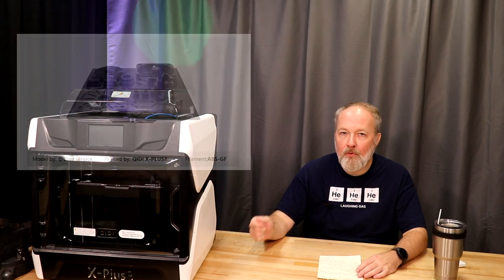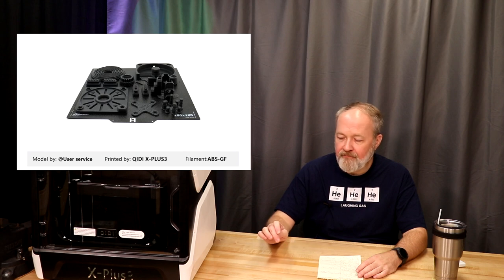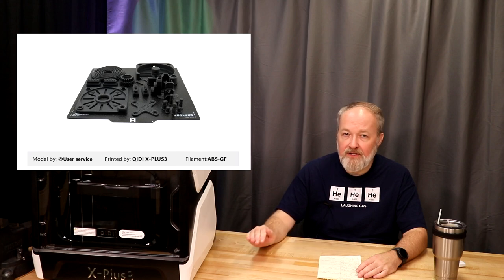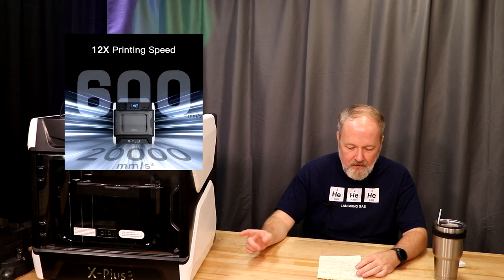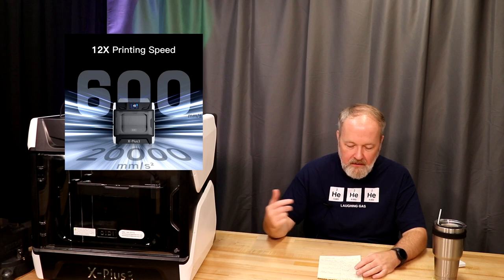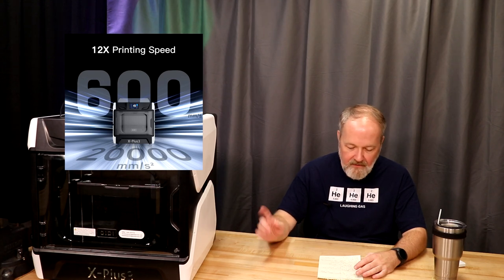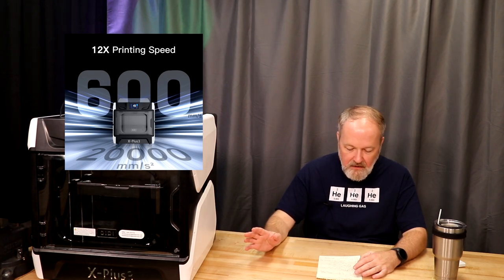This has a PEI removable build plate. I've printed on that plate with everything that I mentioned before—PLA, ABS, PETG, and carbon fiber nylon and everything. Once you get that first layer down, everything stuck. I didn't have anything that peeled off that wasn't my fault. As I mentioned earlier, this has 600 millimeters per second print speed, which is on par with the other Core XY machines that are out. I also mentioned that it has 20,000 millimeters a second squared acceleration. So it's very fast changing directions.